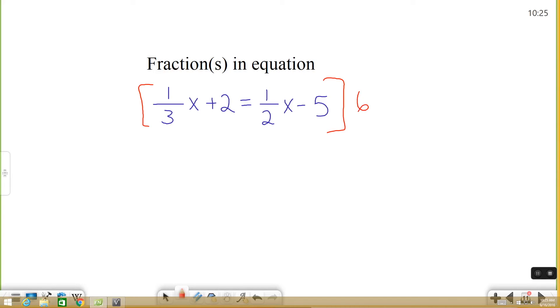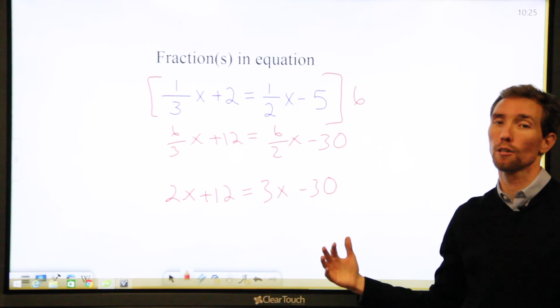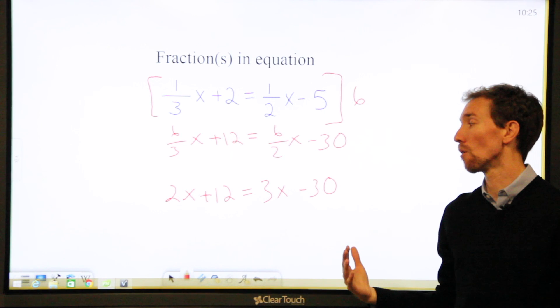And what happens is you end up getting 6 over 3 plus 12 equals 6 over 2 minus 30. The nice thing now is that your fractions will reduce to whole numbers. 6 over 3 is 2. 12 stays the same. 6 over 2 is 3. And 30 stays the same. So now you have all whole numbers in your equation. You can continue on and go to solve them like that.